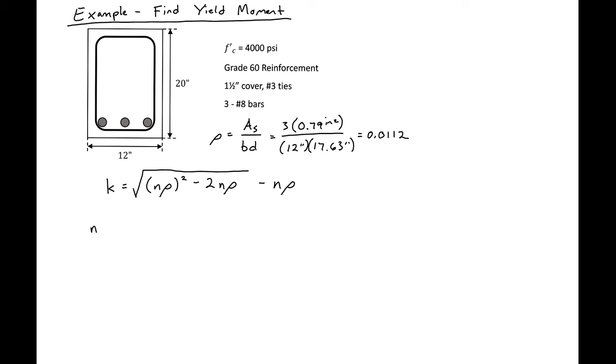So if we remember, our n is just equal to our steel modulus divided by our concrete modulus. So our steel modulus in our case is 29,000 ksi and our concrete modulus for 4,000 psi concrete. We'll use EC equals 57,000 square root of f prime c where our f prime c is in units of psi. We'll get 3600 ksi for our 4 ksi concrete.